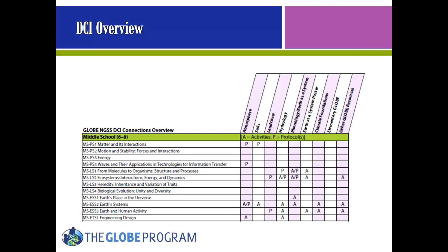Here is a macro-level match table that shows which Globe investigation areas include matches for which disciplinary core ideas at middle school. The DCIs are on the rows and the Globe investigation areas are the columns. Where there is a match, there's either a P or an A. P means that there's at least one protocol identified as appropriate for classroom instruction for at least one of the student performance expectations in that science area, and A means the same thing for Globe activities. This table is provided for every grade level and can be used to quickly identify which areas of NGSS have connections to Globe and which do not.